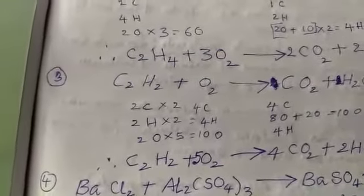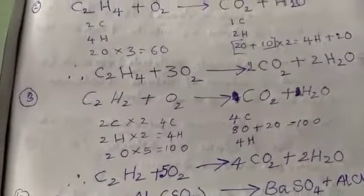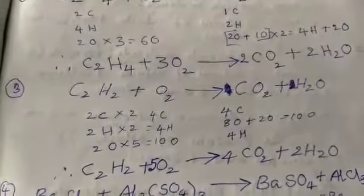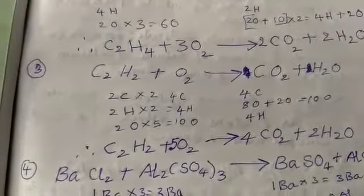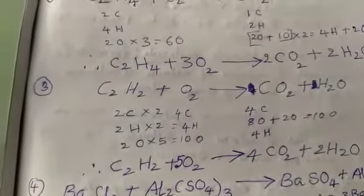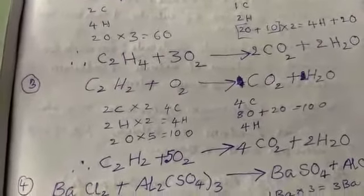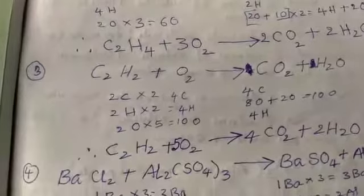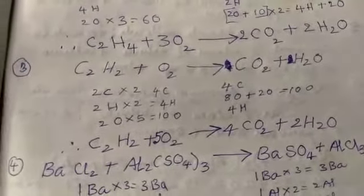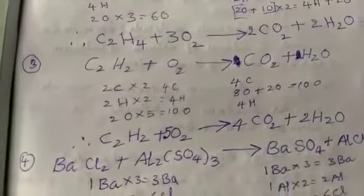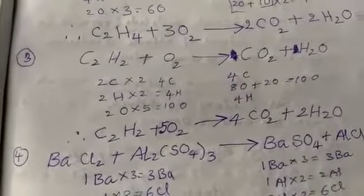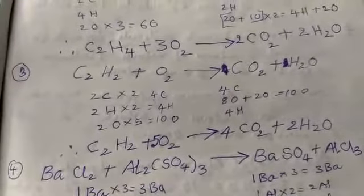Next, C2H2 plus O2 gives CO2 plus H2O. You know how to check the number of atoms on the left-hand side and number of atoms on the right-hand side. After balancing, we get C2H2 plus 5O2 gives 4CO2 plus 2H2O.